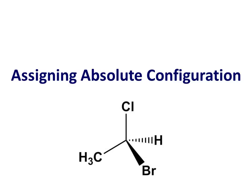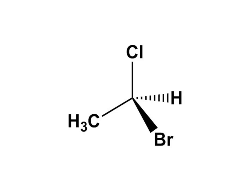To assign absolute configuration to a stereocenter, you first need to know how to assign priority, so make sure you've had a look at that video tutorial before you start on this one. The first step in assigning the absolute configuration of a stereogenic center — also known as a stereocenter, and sometimes called a chiral carbon — is to work out the relative priority of the four groups attached.